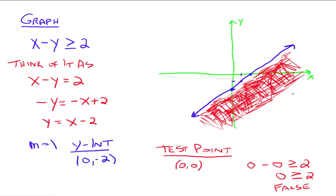If you want to verify, take a point down here like (0, negative 3). Plug it in: 0 minus negative 3 is 3, which is greater than or equal to 2. That's true. Take any other point in that region and it'll always be the case. So any point in the shaded region or on our line will make this particular inequality true.